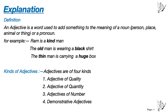Next example: The old man is wearing a black shirt. The highlighted words are old and black. If you remove old and black, the sentence is still correct — the man is wearing a shirt. But we are adding something: old and black. The old man is wearing a black shirt. Old is an adjective and black is also an adjective.